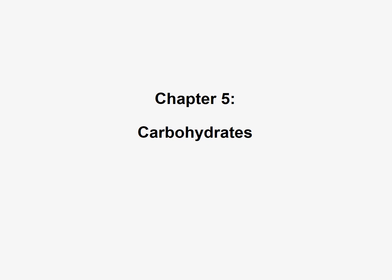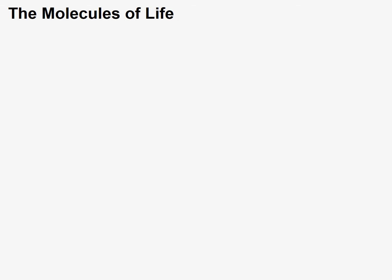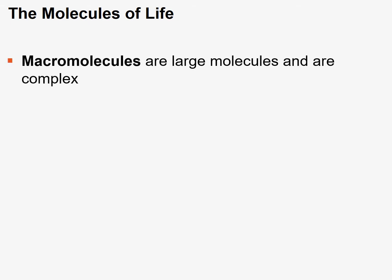This section of Chapter 5 will be covering carbohydrates. All of the molecules of life are considered macromolecules. Macromolecules are large molecules that are quite complex, but they become more complex as new functional groups are added. Remember from Chapter 4, there are functional groups, and they each give macromolecules their characteristics. As more functional groups are added to macromolecules, it makes them quite a bit more complex.